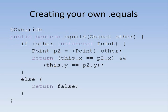Here we show a method that implements equality testing for the point class. It begins with at override, indicating we are going to override the built-in equals method. Then, this is a public method which will return a boolean called equals. The equals method takes in any object. We'll call that object other.